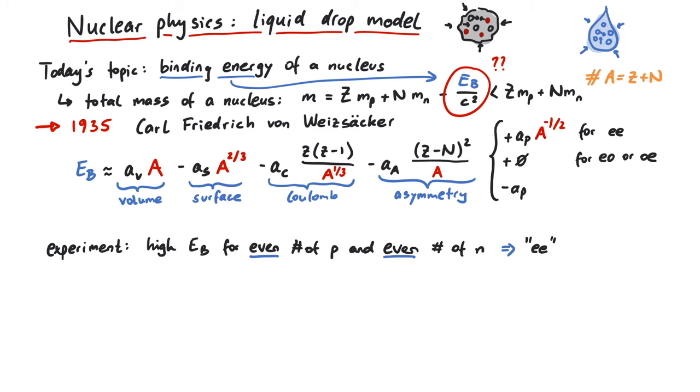we do not have to adjust this formula. But for an odd-odd nucleus, the binding energy goes down again. That is, it is more weakly bound. Since this term comes from pairs of spins that couple together, this term is called pairing term.